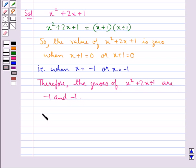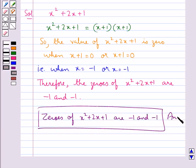Hence, our final answer is zeros of x squared plus 2x plus 1 are minus 1 and minus 1. This completes the session. Hope you have understood the solution for this question.